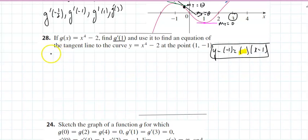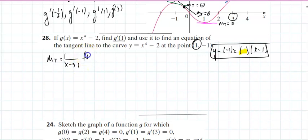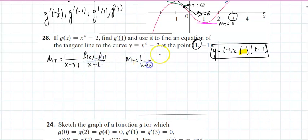If I want to find the slope of the tangent, I have two formulas. Either I use the limit as x approaches 1 of f(x) minus f(1) all over x minus 1, or the slope of the tangent would be the limit as h approaches 0 of f(1+h) minus f(1) all over h.